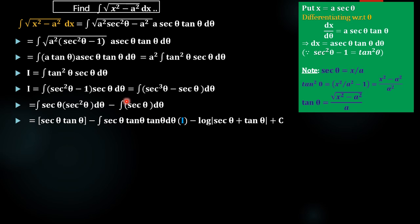We know that ∫sec θ dθ = log|sec θ + tan θ| + c by the standard formula. Now notice that ∫sec θ·tan²θ dθ is exactly our I. So the expression for I becomes: I = sec θ·tan θ - ∫sec θ·tan²θ dθ - ∫sec θ dθ, which means I contains itself on the right-hand side. We take this I term to the left-hand side.